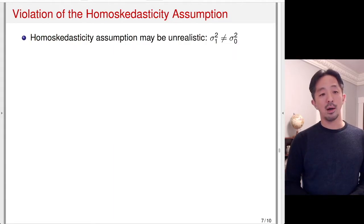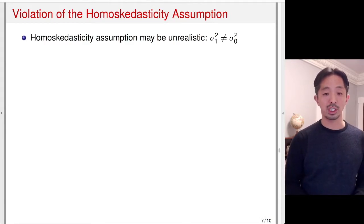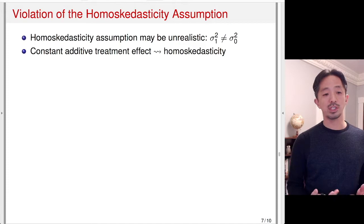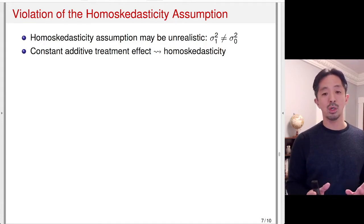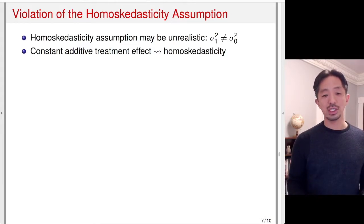Suppose the homoskedasticity assumption is violated — that is, the variance of the error term under the treatment condition differs from the variance under the control condition: sigma_1 squared is not equal to sigma_0 squared. Homoskedasticity is realistic under the constant additive treatment effect assumption, because then sigma_1 squared and sigma_0 squared are the same — the variance of the potential outcome just shifts by a constant. But in other situations, this assumption is highly unrealistic.